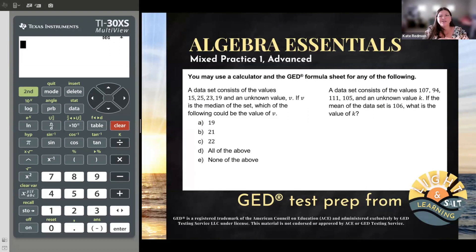Which of the following could be the value of V? So there's this number, it's V, it's in this set of numbers, and we know something about it. We know it's the median, but maybe we don't know what the median is. So go hit up the formula sheet.